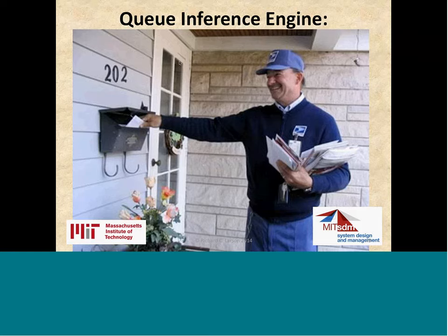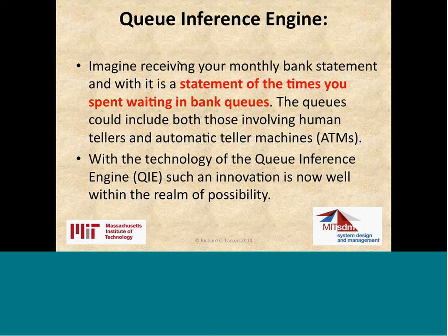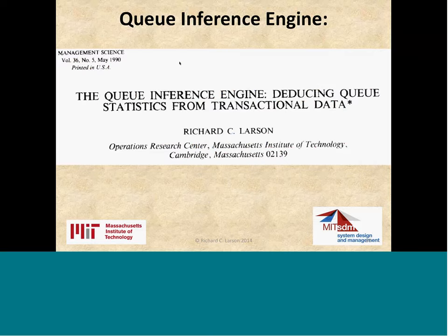We generated an order N-cubed algorithm — polynomial order three. If there's a busy period of 17 customers, the computation grows as 17 cubed, which is trivial for today's computers, and was even trivial 25 years ago. Imagine receiving your monthly bank statement with a record of the times you spent waiting in bank queues. You'd wonder if they'd videotaped you at every line — but they don't have to. They do this big data analysis with a Queue Inference Engine. These queues could include both ATM queues and human teller queues — an innovation well within the realm of possibility.